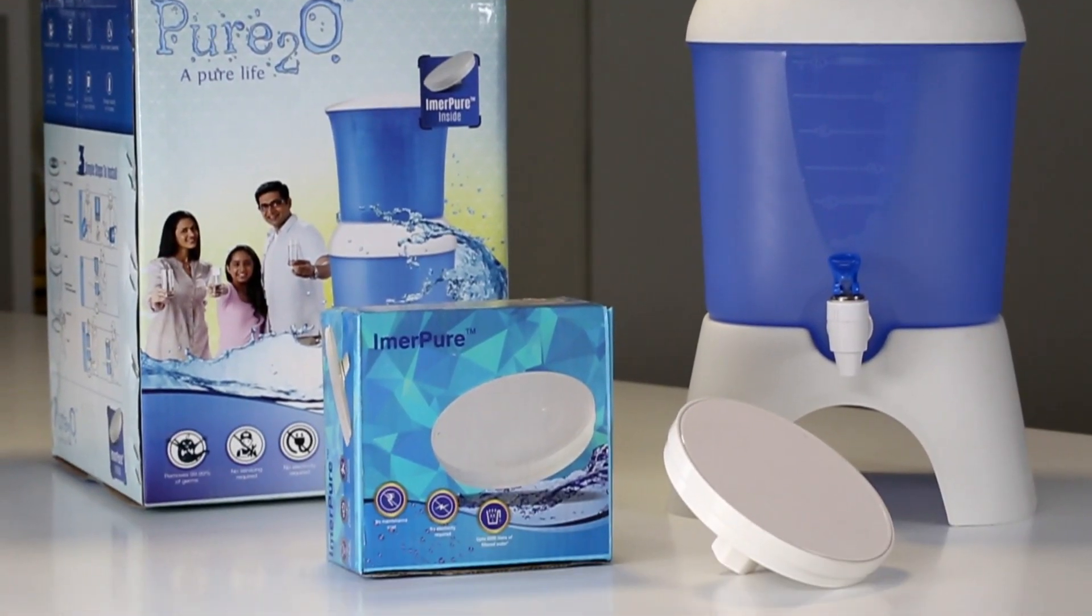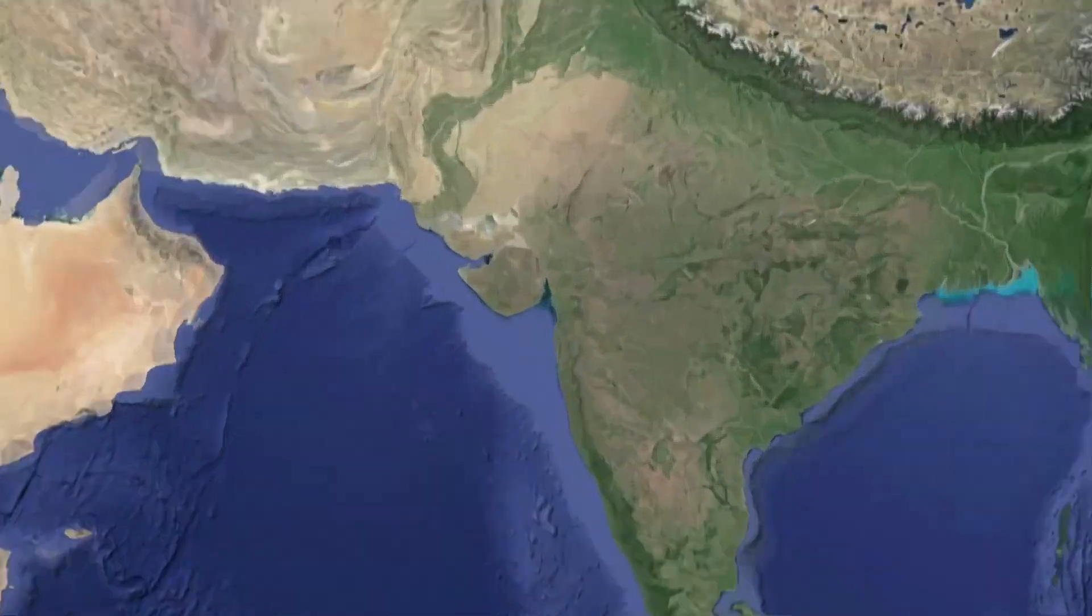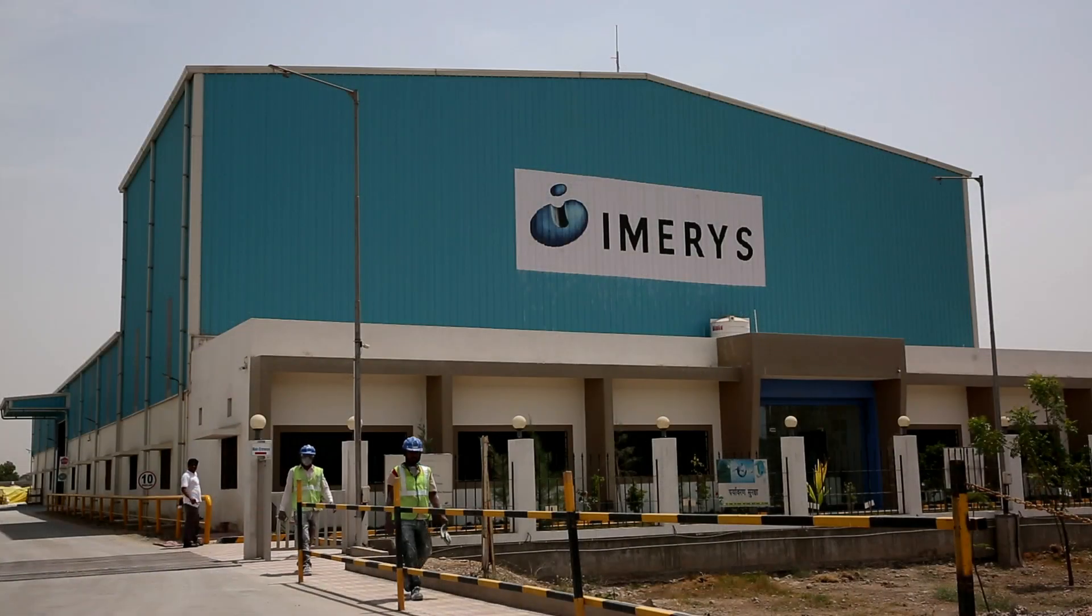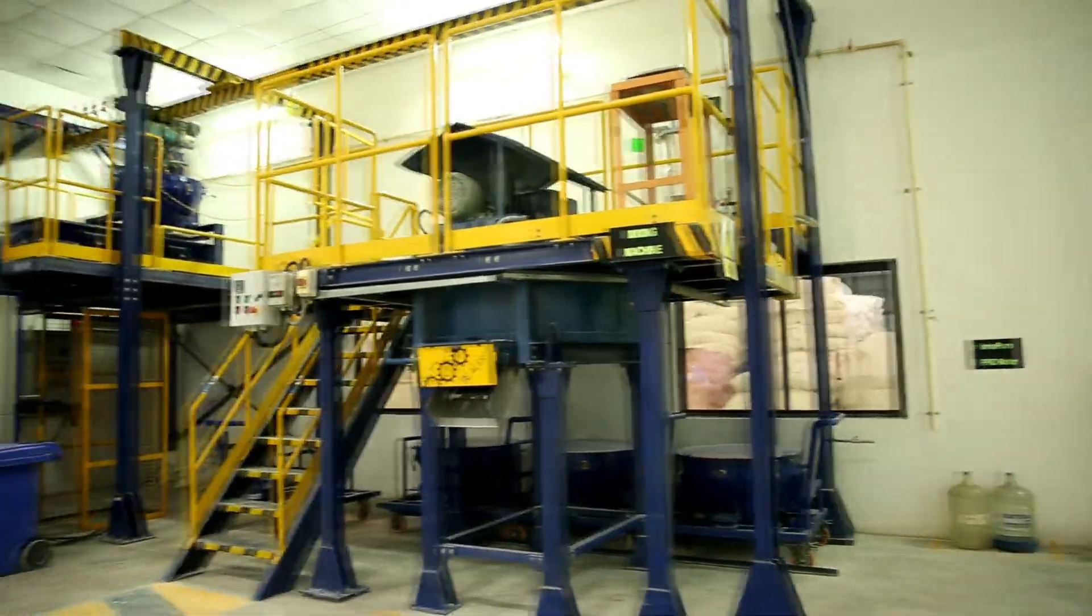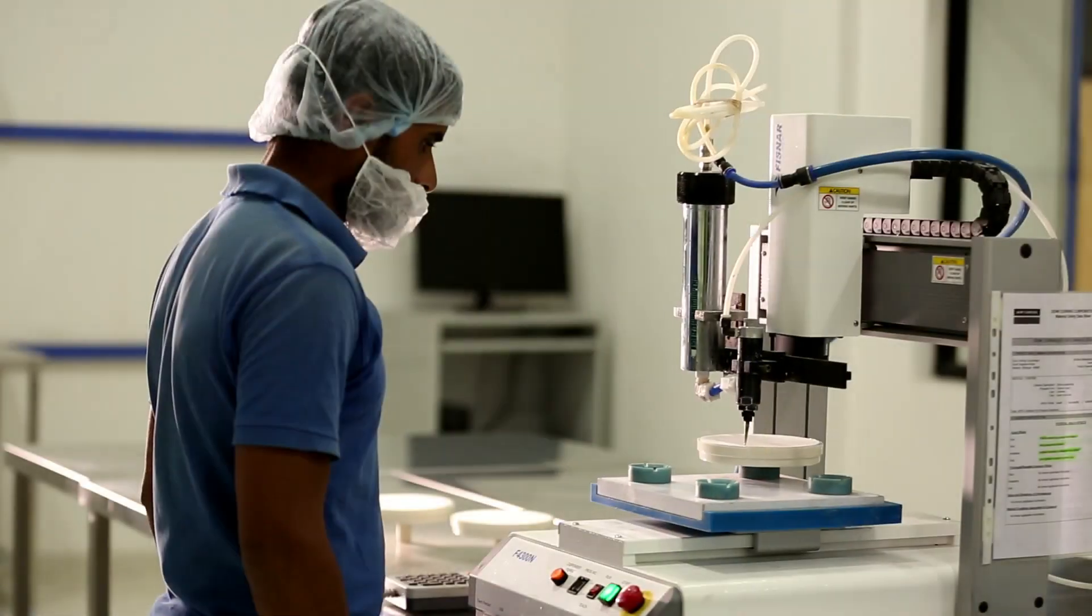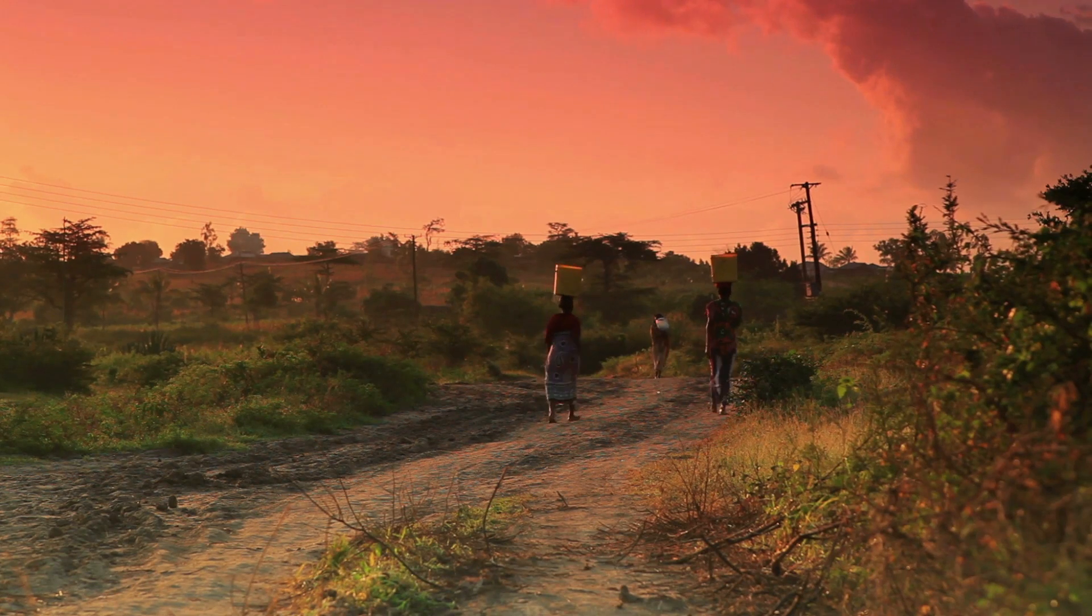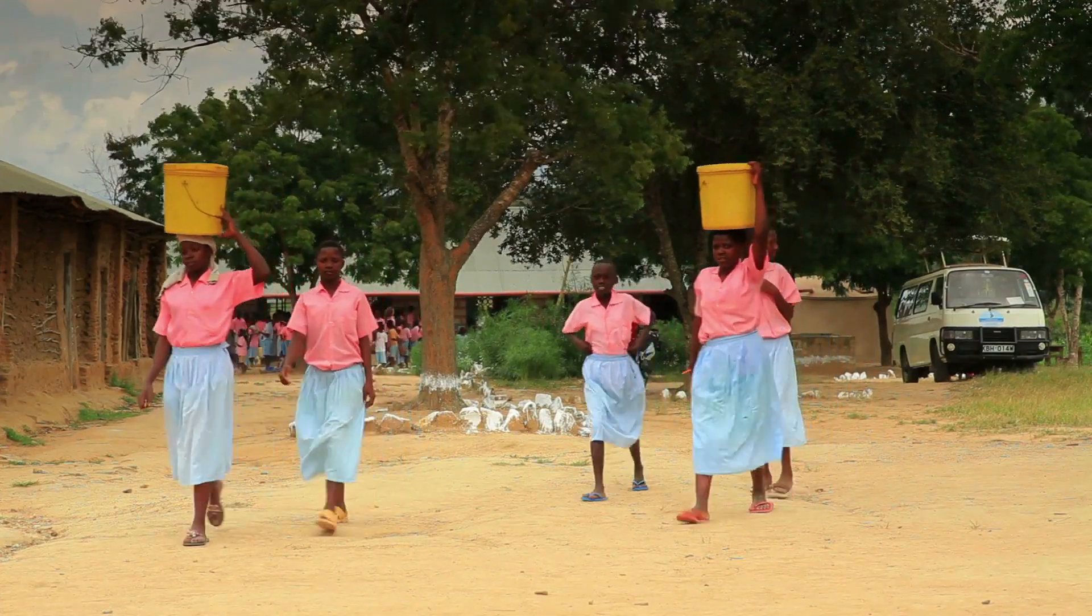True to its vision and ambition, the new Imerpure plant located in the western Indian state of Gujarat has been built to meet these exact goals. The facility has been specifically designed to produce high quality consistency that could benefit millions of people lacking access to clean drinking water today.